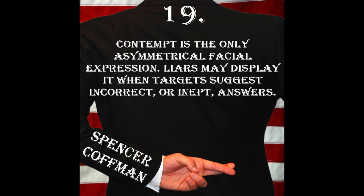Contempt is something that will happen with a lip corner — whether it's the right or the left depends on the person. Usually it is the right because the right brain is more involved with deception. It is usually the left side of the face that has more expressiveness when people are being deceptive, giving evidence that the right brain is more deceptive. The left brain is more truthful, which means the right side of the face has more positive or truthful facial expressions. One lip corner goes up a little bit — usually the right, but it could be the left.